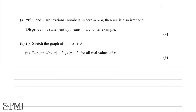Let's read these questions and see what's going on. If m and n are irrational numbers where m does not equal n, then m times n is also irrational. We have to disprove this statement by means of a counter-example.